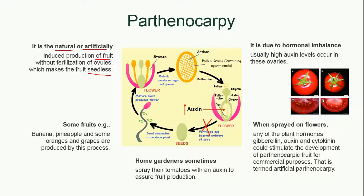This fruit is seedless because it develops without any fertilization. Normally, the male gamete fuses with the female gamete, known as the egg, and because of this fertilization process a seed is developed. But due to parthenocarpy, the male gamete does not fuse with the female gamete, so there are no seeds.